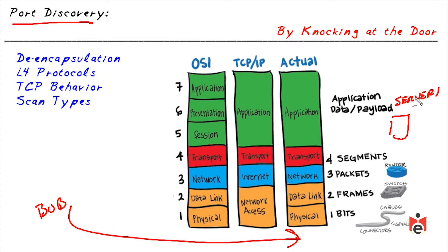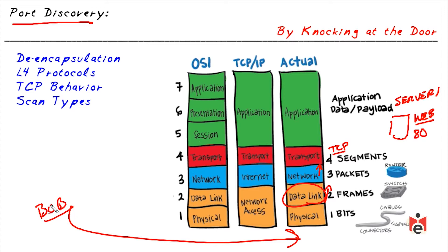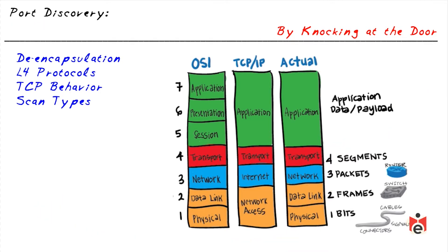The IP header identifies which Layer 4 protocol is in use. If it's an HTTP request it uses TCP, and a web server likely listens on TCP port 80. If we send a request to TCP port 80 the server responds in predictable ways, allowing Bob's computer to confirm that TCP port 80 is open and available.